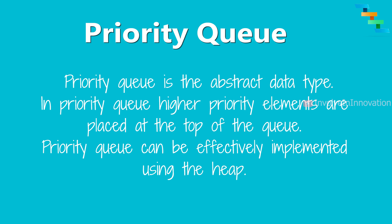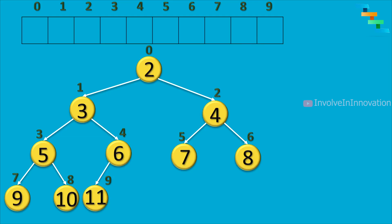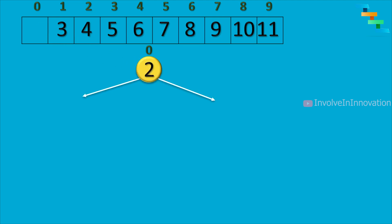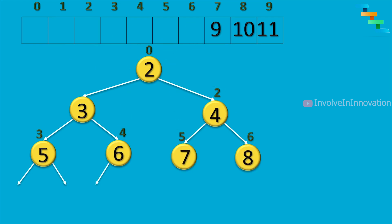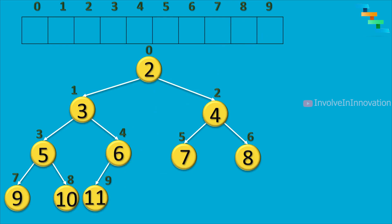Now we will see how to represent the data in the heap. The most important part of heap is that we will use the array data structure to represent the heap. You may be curious about how we can represent a binary tree using an array data structure. This is done by using the index positions. We will use an array whose index starts from position 0, as in almost all programming languages array index starts from index position 0.